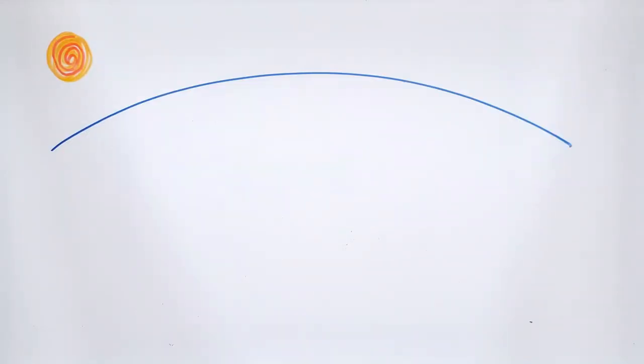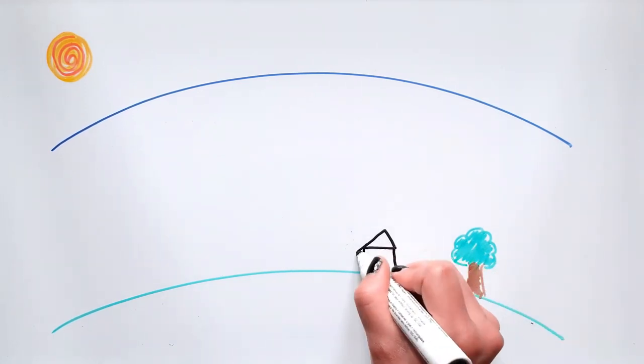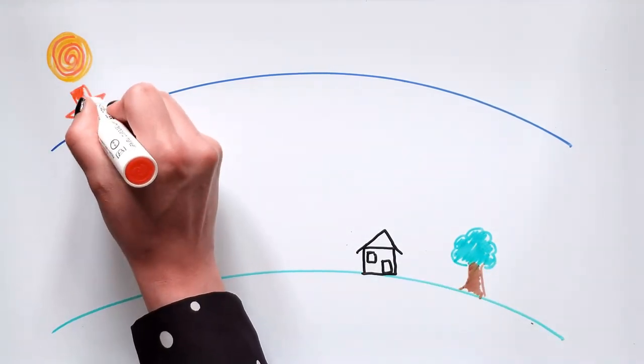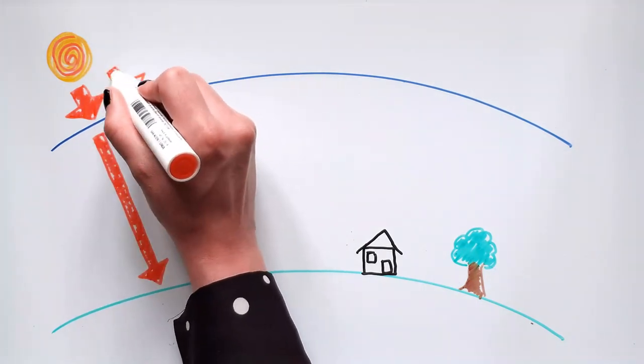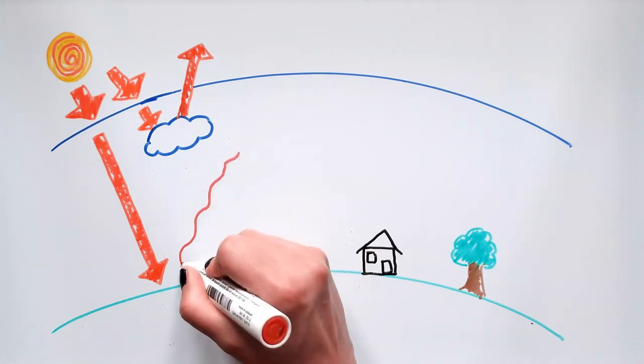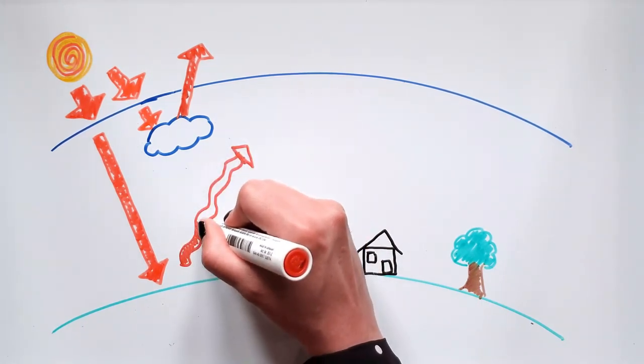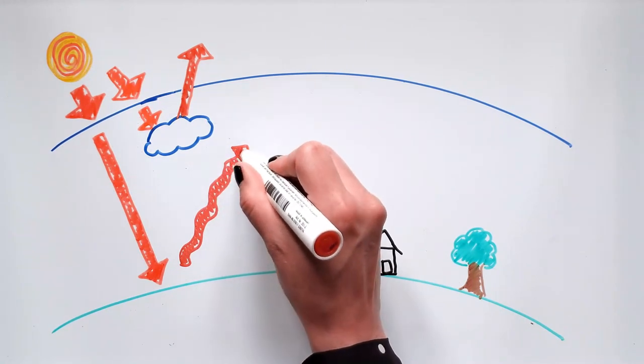Visible light is emitted by the Sun and travels towards Earth. Around 30% of that light is reflected back into space by the atmosphere, clouds and Earth's surface. The rest is absorbed and re-emitted as infrared light. The energy going out from the atmosphere has to balance the energy coming in from the Sun.